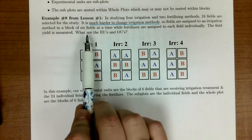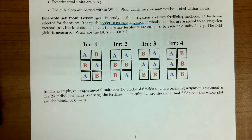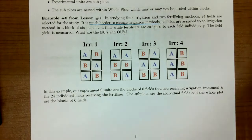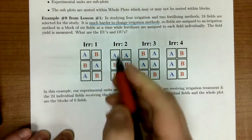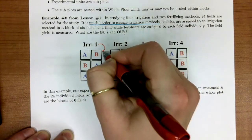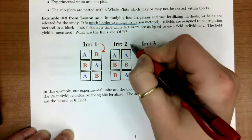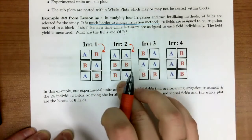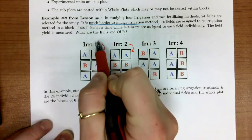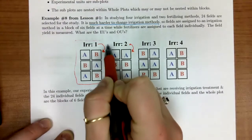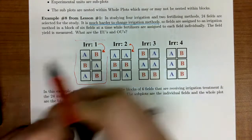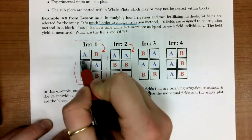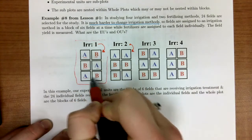In lesson one, we focused on what are our EUs and OUs. In this case, our irrigation method is hard to change. So we had these six blocks or six fields, and we applied irrigation method one to all of them. Then we apply irrigation method two to all these six. When we're applying our irrigation, this would be called our whole plot, and we would have four whole plots. Then within our whole plot, we're going to assign a fertilizer.